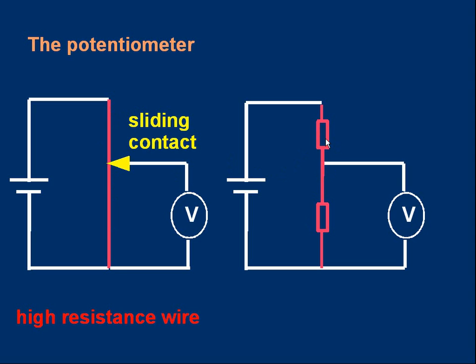that would be the same as reducing the value of the top resistor and increasing the value of the bottom resistor, because the length of wire corresponds to the resistance of the section of wire.